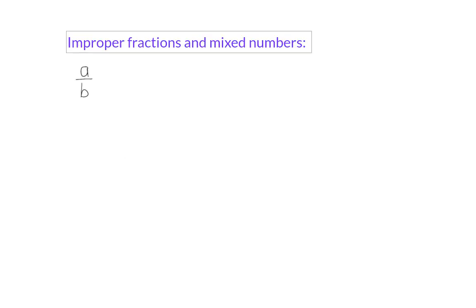Improper fractions are fractions where the numerator is bigger than the denominator. A number like this consists of an integer part and a fraction part.